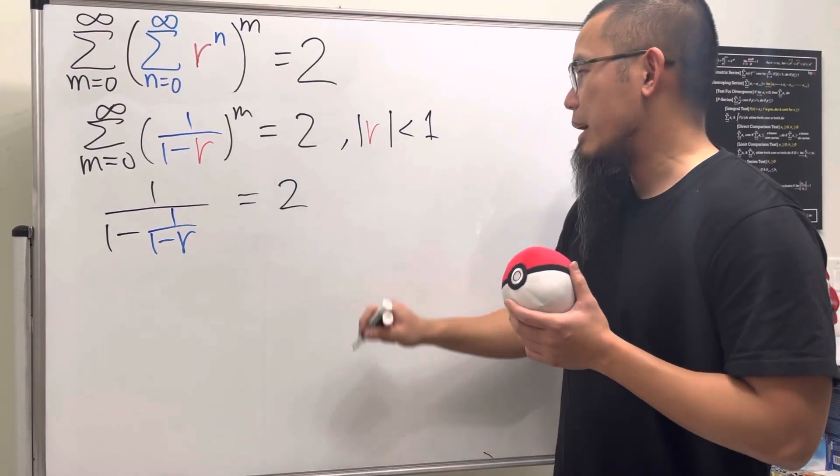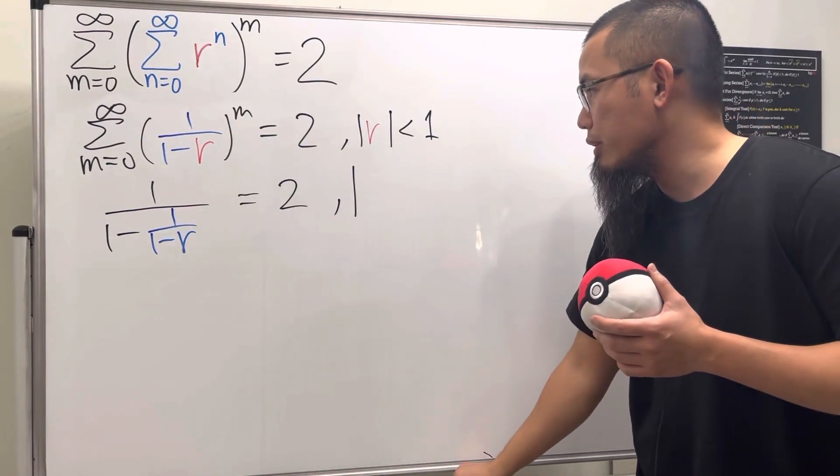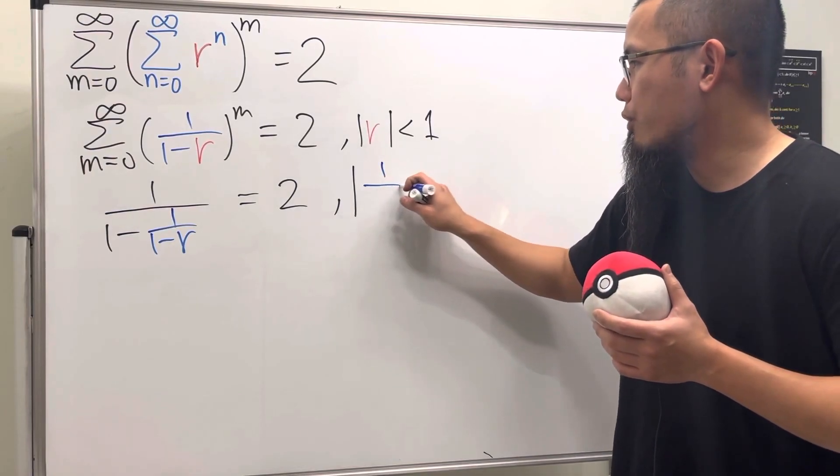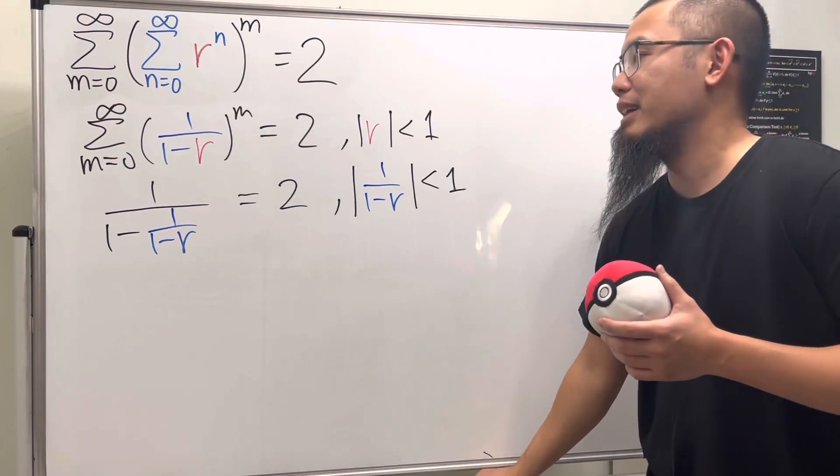And again, same idea, we have to make sure that the absolute value of this, which is the common ratio now, and that's one over one minus r, we have to make sure this is less than one.